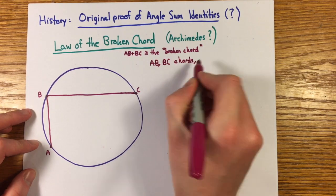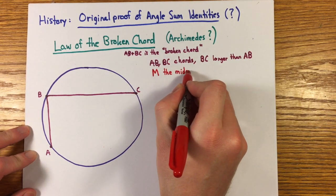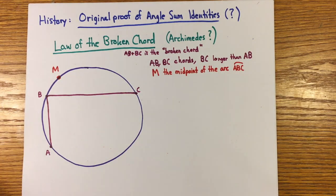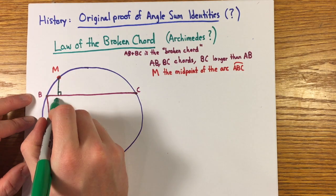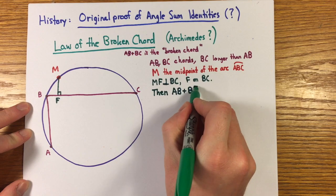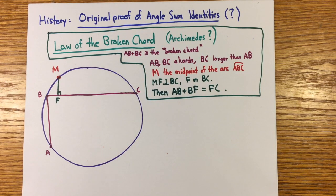The theorem says that if you have two chords AB and BC inscribed in a circle with BC longer than AB, and if you take midpoint M along the arc ABC and drop a perpendicular MF to BC, then AB + BF = FC.